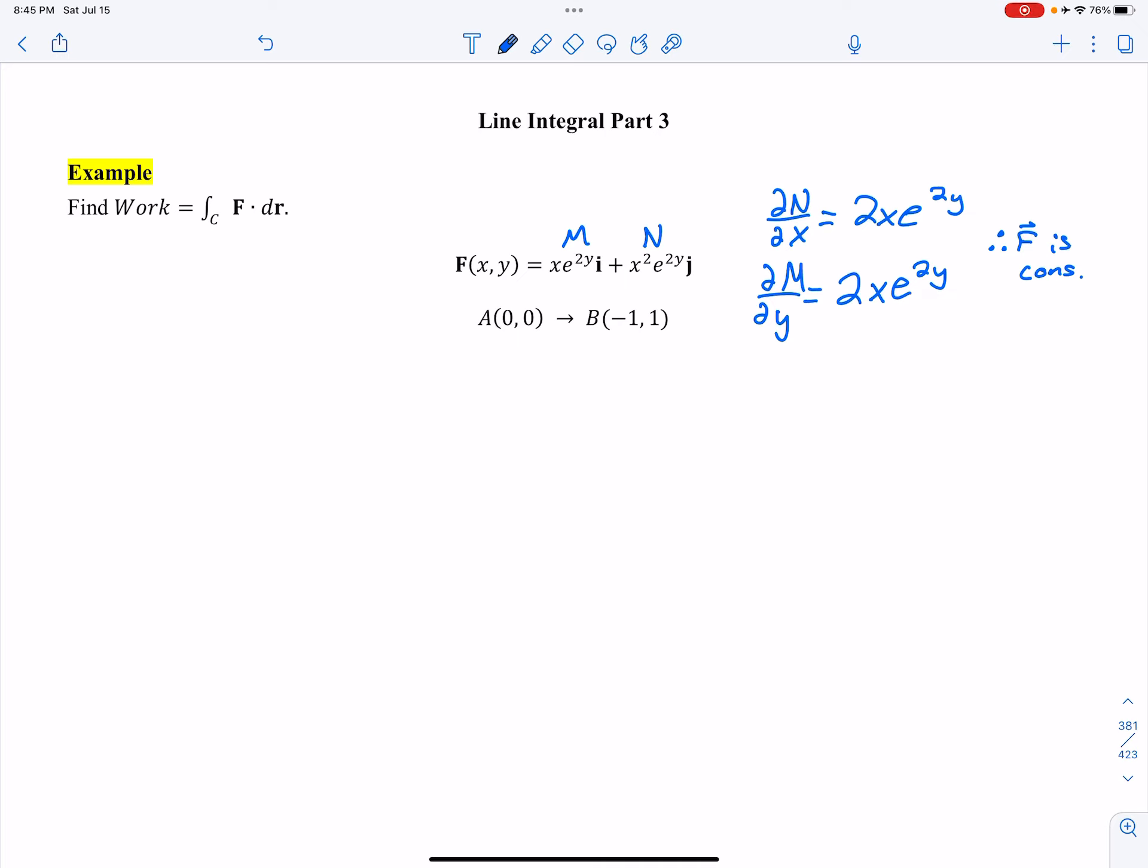So we run through the same method. Then the gradient of phi is equal to F, which is equal to partial of phi with respect to X, partial of phi with respect to Y, which is equal to MN.